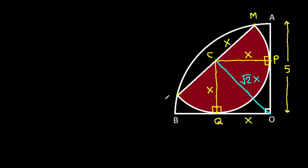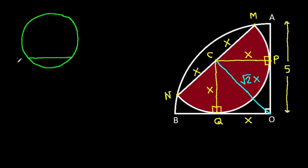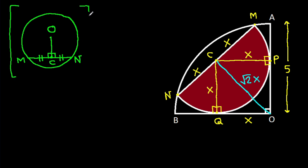Suppose this point is N, then CN will also be X. In any circle, if MN is any chord and O is the center, and C is such that CM = CN, then OC is perpendicular to MN. Here CM = CN = X, so OC is perpendicular to MN.